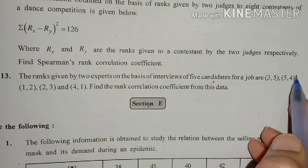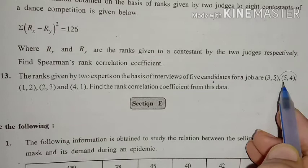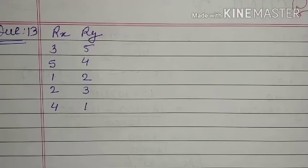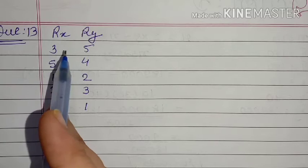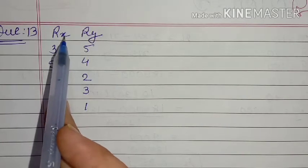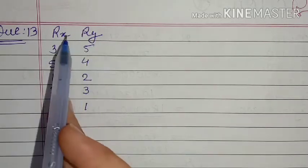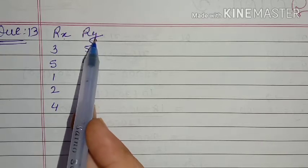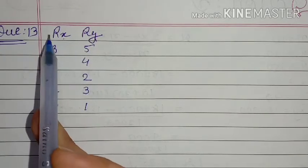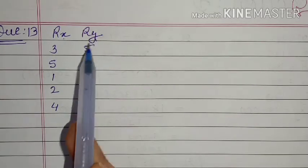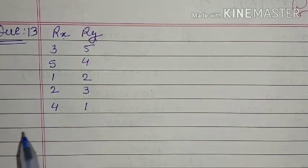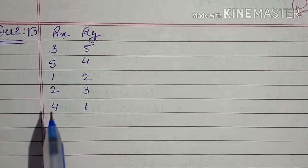Now second candidate, third candidate, and so on. For first interviewer and second interviewer: 1, 2, 3, 4, and 5. So here is Rx and Ry, the obvious ranks.